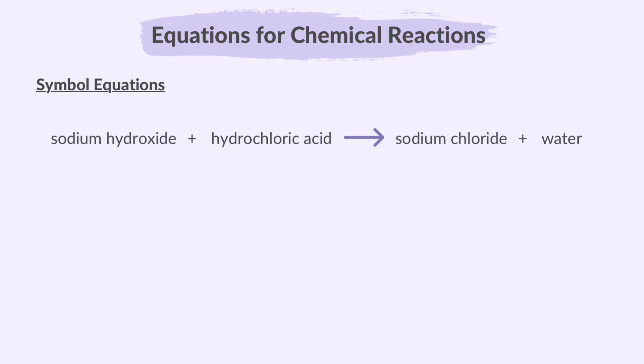In symbol equations, instead of words, we use chemical symbols or formulas like NaOH for sodium hydroxide and H2O for water. So the equation for the reaction above becomes NaOH plus HCl to give NaCl plus H2O.